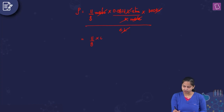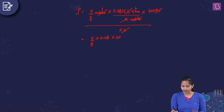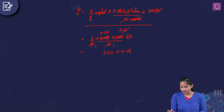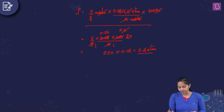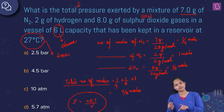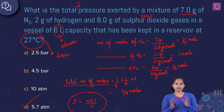Applying approximation using 0.08 instead of 0.0821: it's (11/8) multiplied by 0.08 multiplied by 300 divided by 6. This simplifies to 11 times 5 equals 55, then 550 multiplied by 0.01, which gives 5.5 ATM. The total pressure exerted by the mixture is approximately 5.5 ATM. Looking at the options, option D is 5.7 ATM, so option D is the right answer.